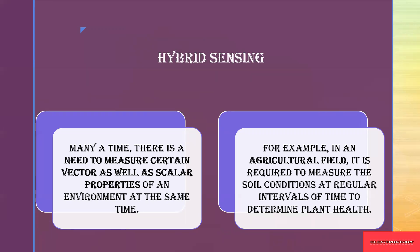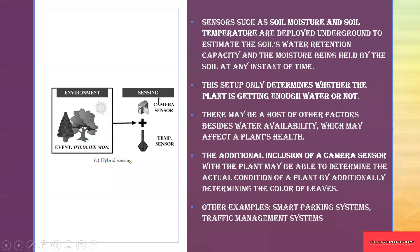In hybrid sensing you have both vector and scalar quantities together. Sensors such as soil moisture sensors and soil temperature sensors measure whether the soil can retain water for the plant to grow. All such sensors are used to determine whether the plant is getting enough water to grow perfectly.